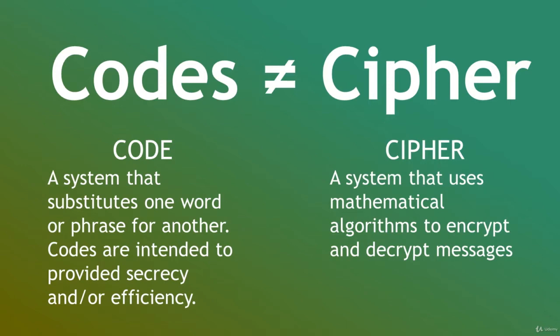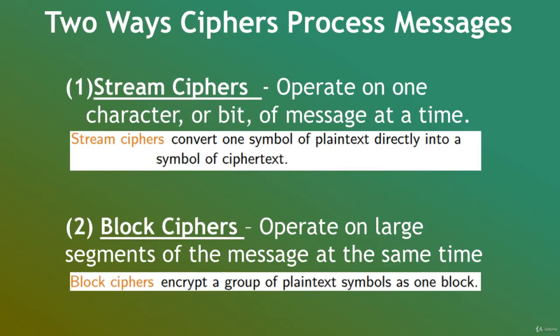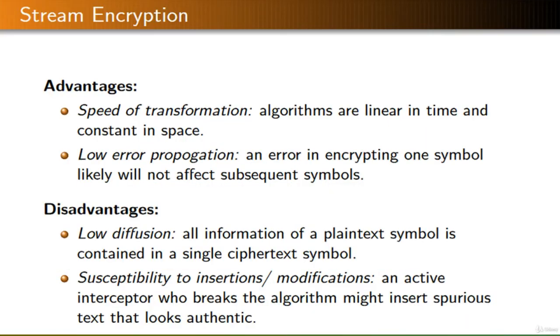A cipher, on the other hand, is a system that uses mathematical algorithms to encrypt and decrypt messages. There are two ways ciphers process messages. The first way is stream ciphers, which operate on one character or bit of message at a time, converting one symbol of plaintext directly into a symbol of ciphertext. The other method is block ciphers, which operate on large segments of the message at the same time, encrypting a group of plaintext symbols as one block.